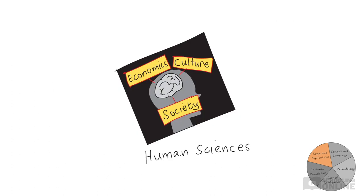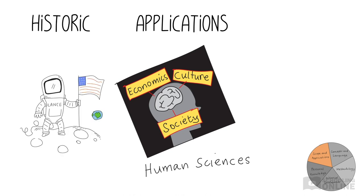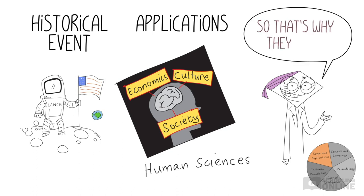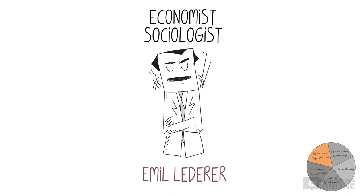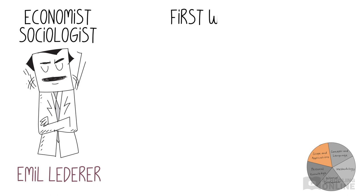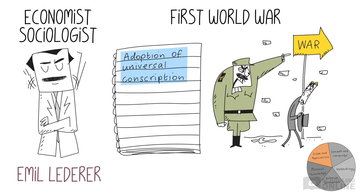The human sciences have plenty of applications. They can help us understand why a certain historical event occurred — in other words, they can help us uncover the human decision-making processes that caused an event. For instance, Emil Lederer, a German-born economist and sociologist, outlined a network of factors that led to the First World War.